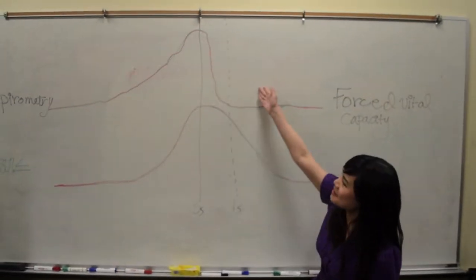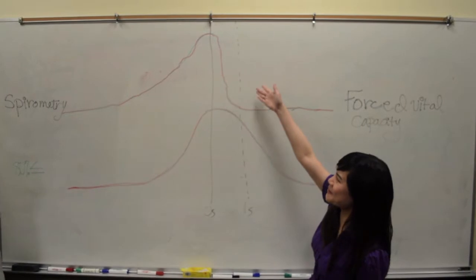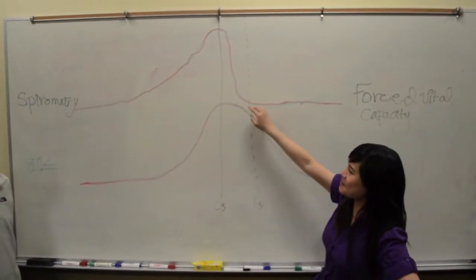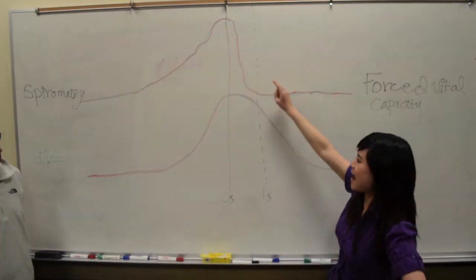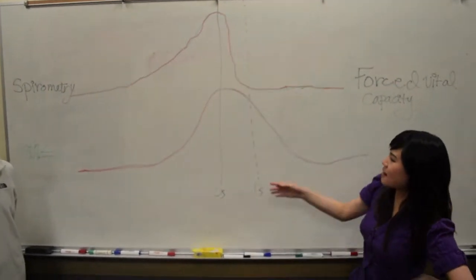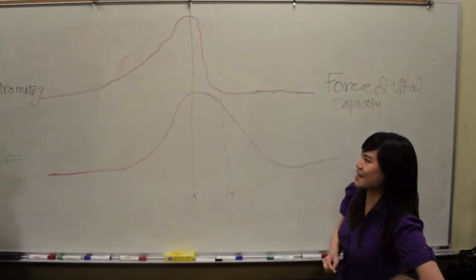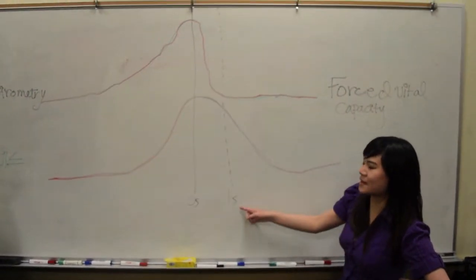So this graph shows a healthy individual, and their forced expiratory reserve is greater than 80% after 1 second. And then this graph is someone with asthma, and their forced expiratory volume is less than 80% after 1 second.